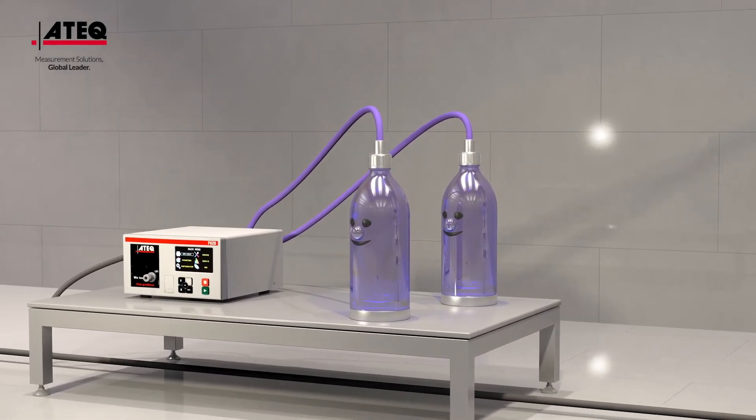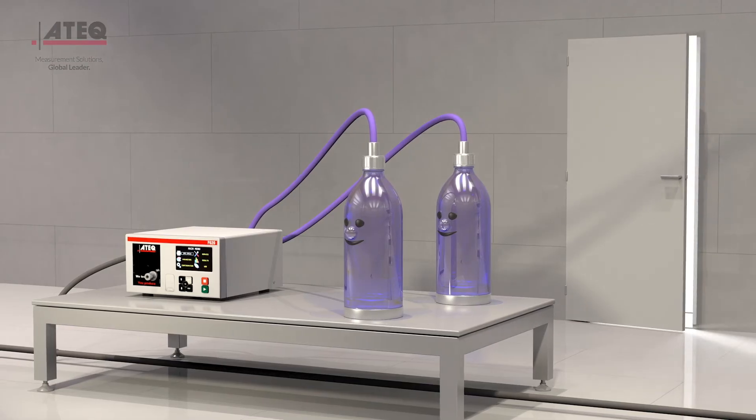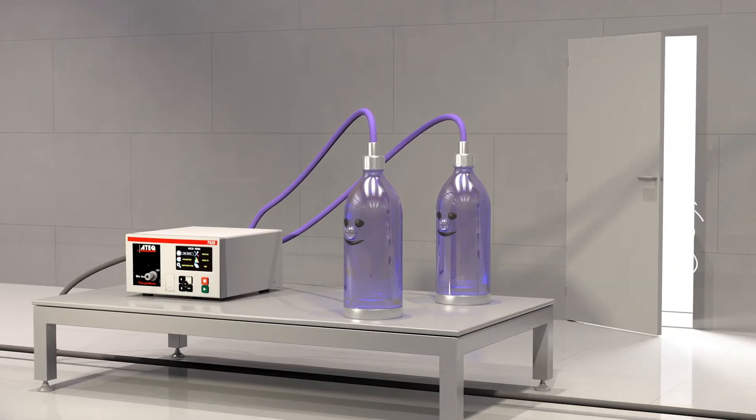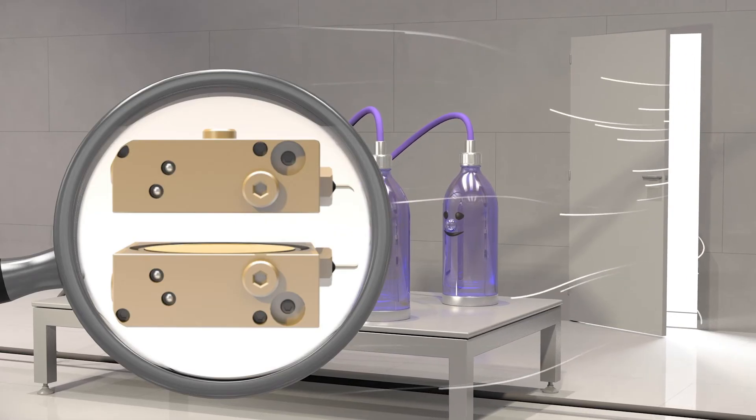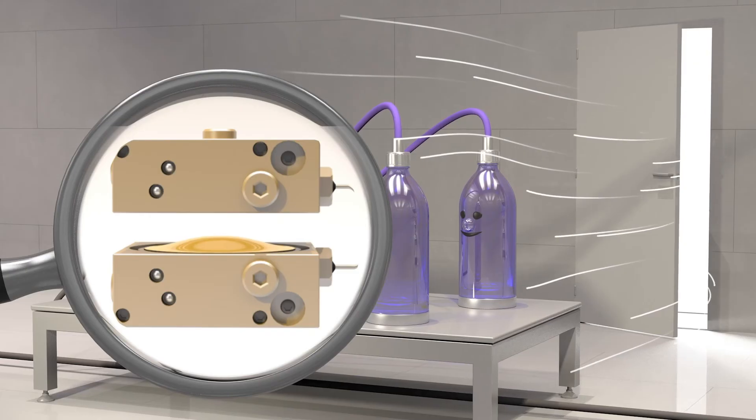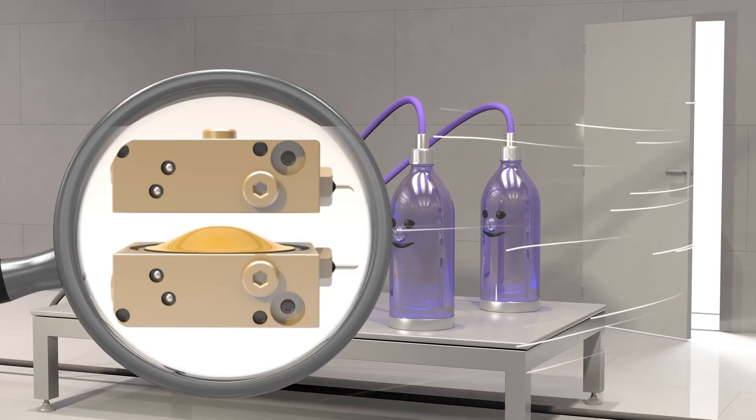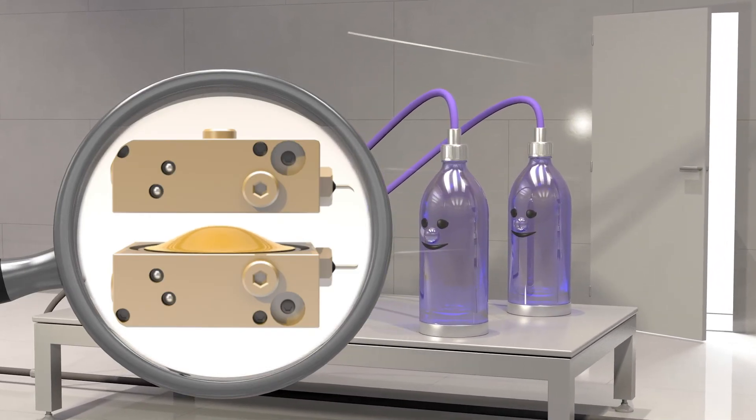But the differential pressure drop has another benefit. When ambient disturbances such as air currents occur, the differential pressure test is not affected. The micropressure variations resulting won't occur on the two pieces at the same time and in the same proportions. Only a leak will create a difference and will be detected.